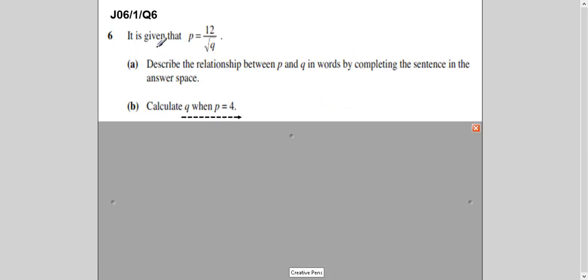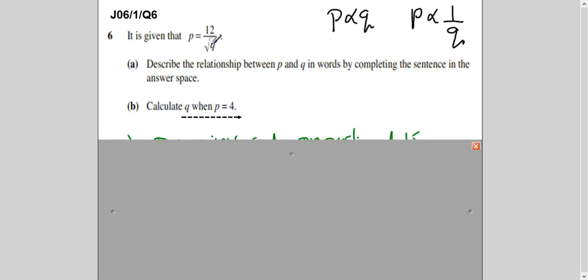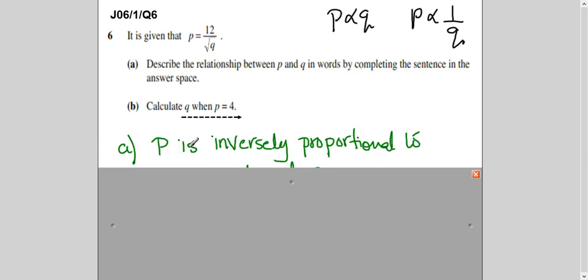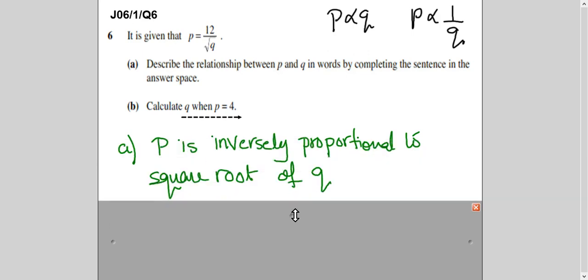Now this part. P is equal to 12 over root Q. Now this question is saying describe the relationship between P and Q in words. So what do you see? Is it a directly proportional or inversely proportional? Remember I told you that when we write like this it is directly proportional. When we write like this it is inversely proportional. So this is in the denominator so I can say it is inversely proportional relationship and it is P is inversely proportional to a square root of Q. Here I'm just giving you example. I'm not explaining this question. Just the idea. So you can say P is inversely proportional to a square root of Q. And 12 is your value of K.